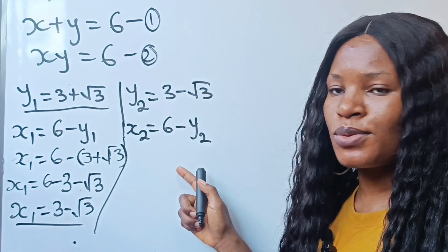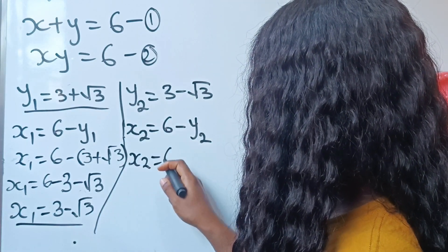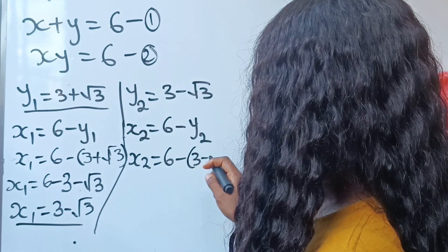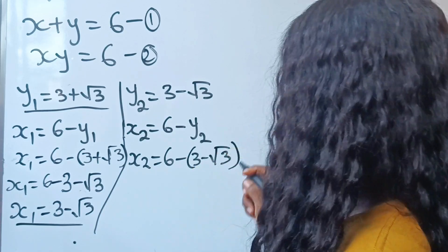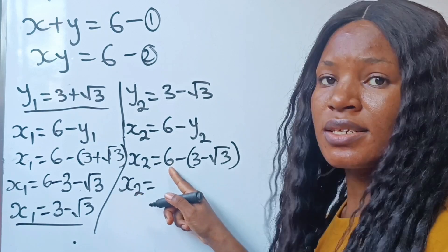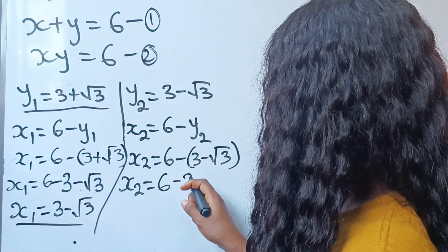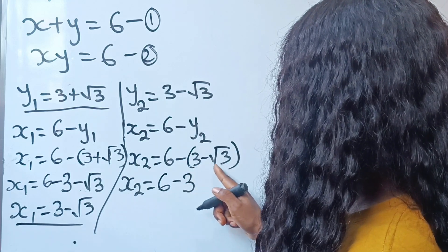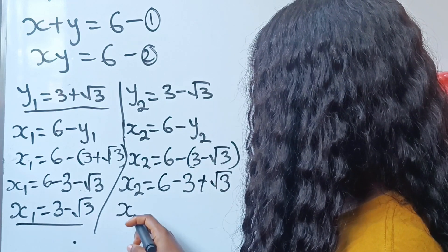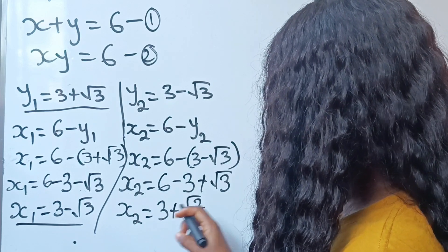Similarly, x2 equals 6 minus y2, and y2 is 3 minus root 3. So x2 equals 6 minus 3 minus root 3. That gives us 6 minus 3, which is 3, then minus times minus root 3 gives plus root 3. So x2 equals 3 plus root 3.